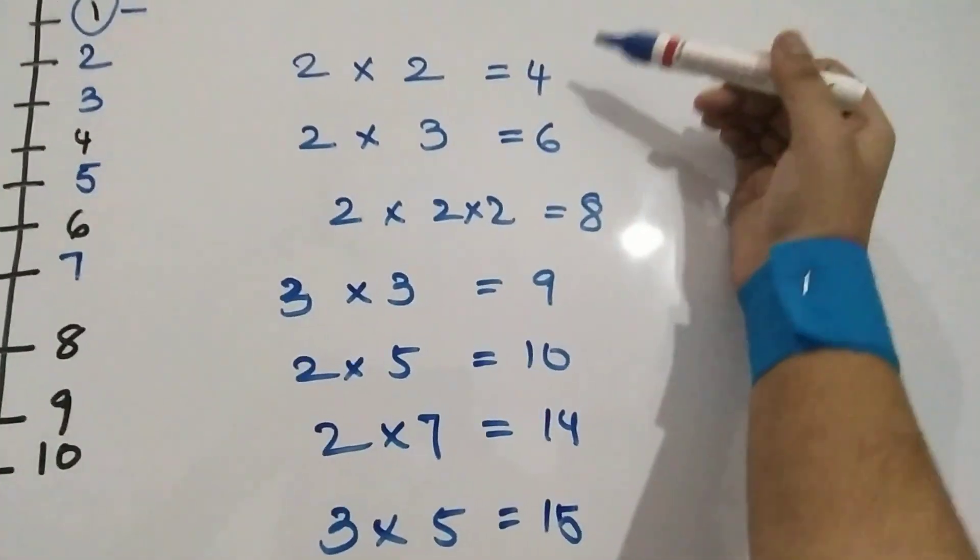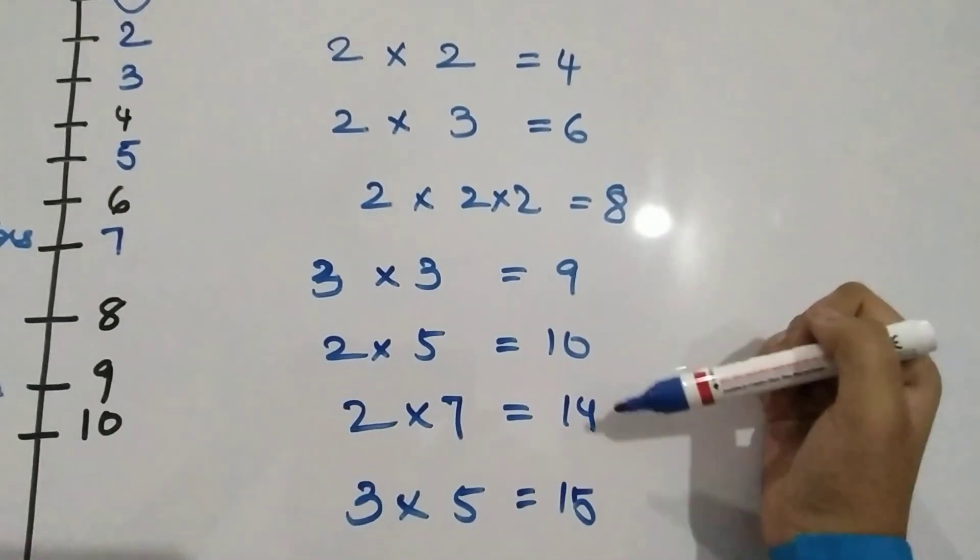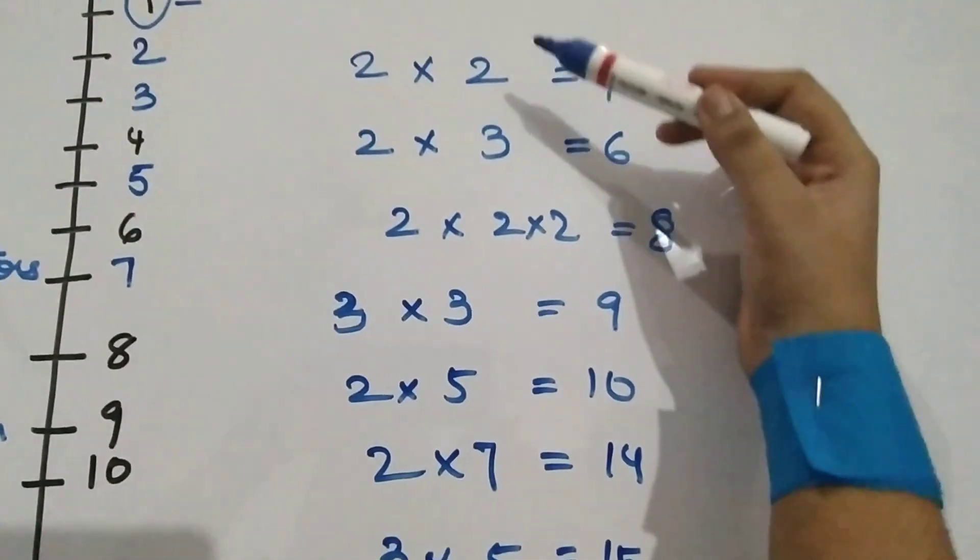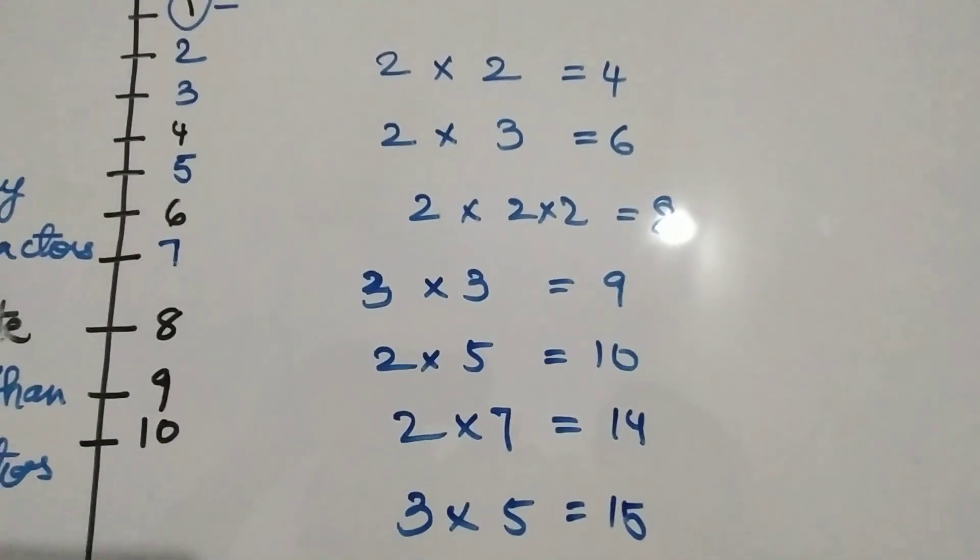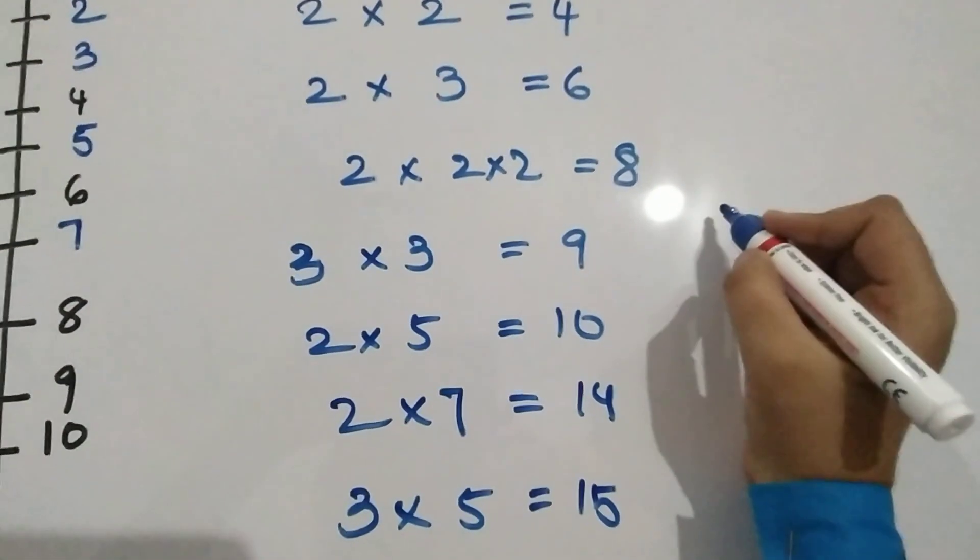So here you can see an interesting pattern with 4, 6, 8, 9, 10. If we multiply primes we are getting composite numbers. So prime numbers are actually building blocks of composite numbers.